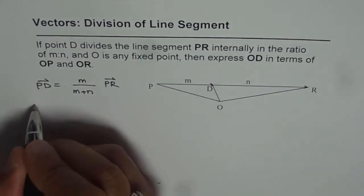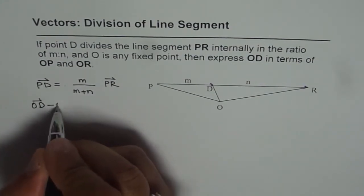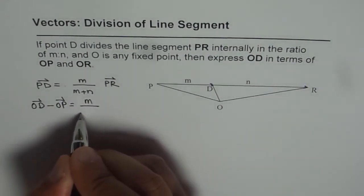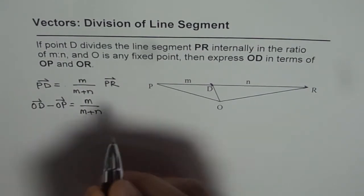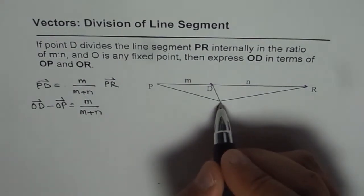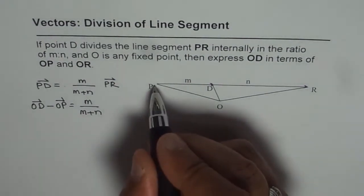So we can write PD as OD minus OP and that equals M over M plus N. What is PR? PR is OR minus OP.